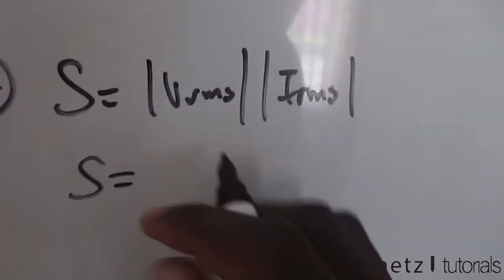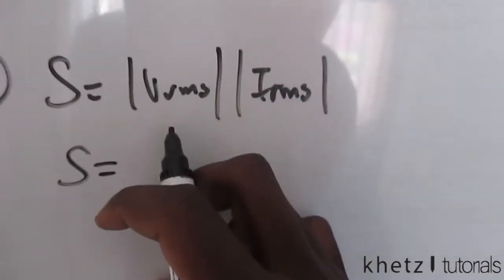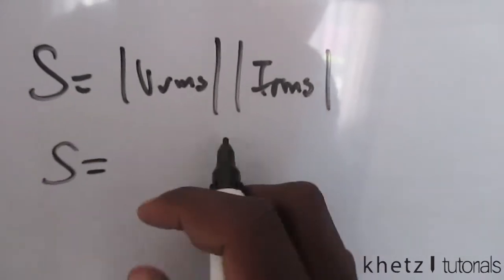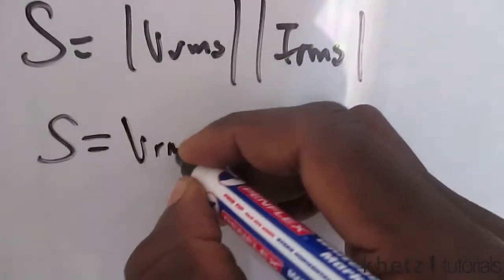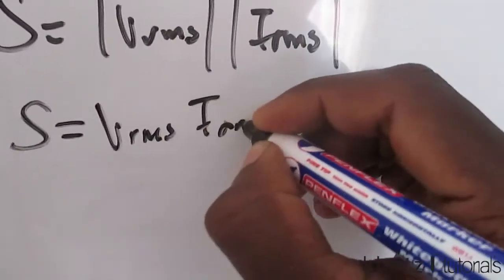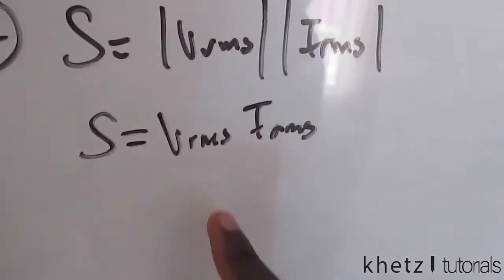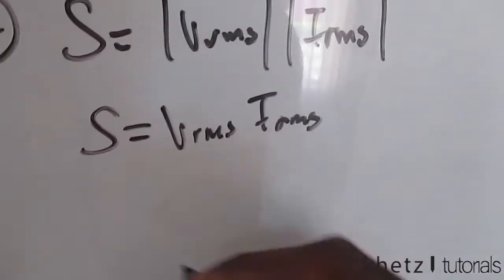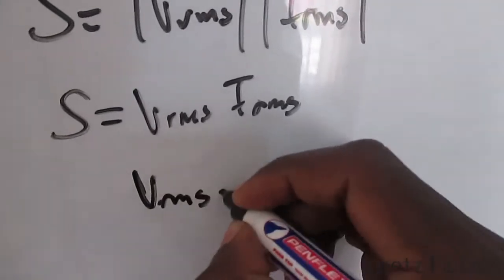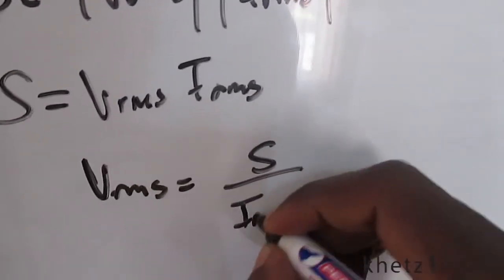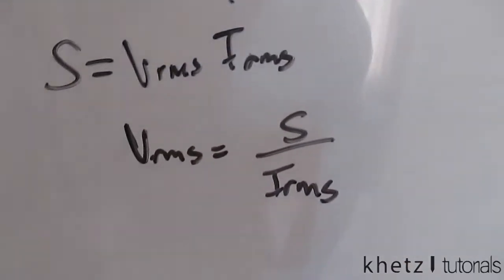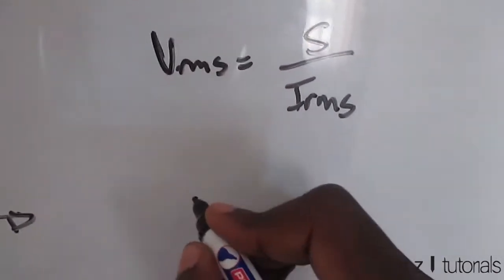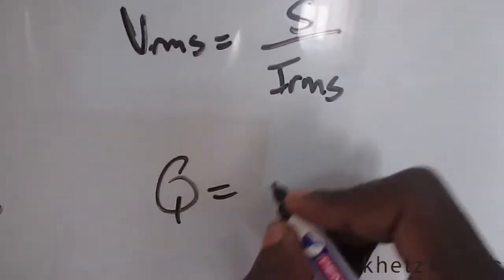You're going to see this value of Vrms and Irms multiplied by each other. We are asked to find Vrms and we can quickly find this value. So Vrms equals S divided by Irms. Now going back to that same reactive power, you can also...